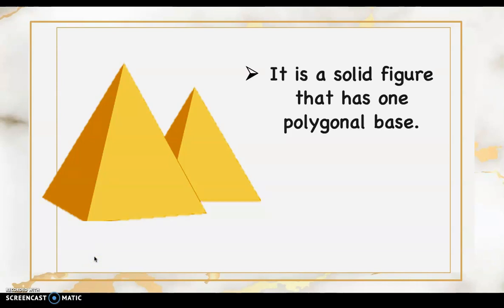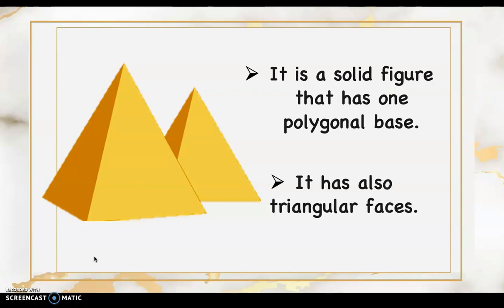Good day everyone. Let's start our lesson by recalling and describing pyramids. A pyramid is a solid figure that has one polygonal base and triangular faces. The name of the pyramid depends on the shape of its base. In this figure, it is called a rectangular pyramid since the base is a rectangle. The number of triangular faces also depends on the number of sides of the base, so this rectangular pyramid has four triangular faces since there are four sides of a rectangle.